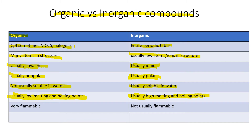The last property to discuss is flammability. Organic compounds tend to be very, very flammable — they burn easily and readily. Inorganic compounds are usually not flammable. These are general statements — you'll occasionally see a nonpolar inorganic compound or a polar organic compound, but these are the general properties that first pop into your mind when thinking about most organic versus most inorganic compounds.